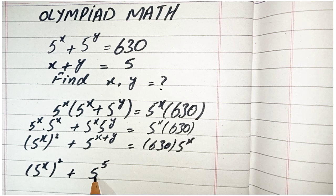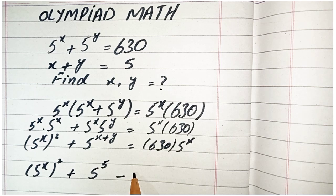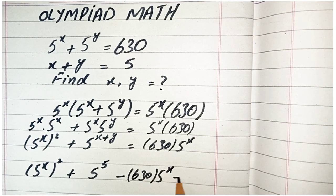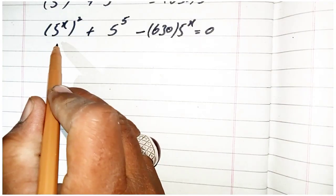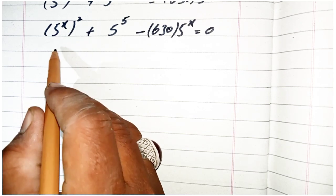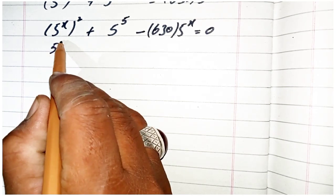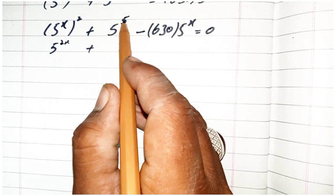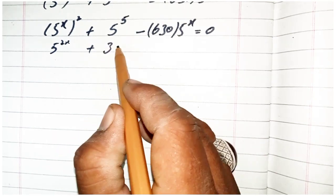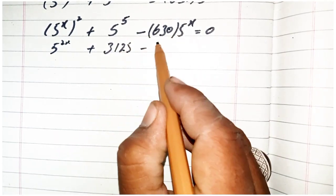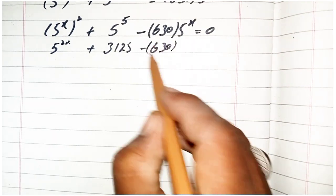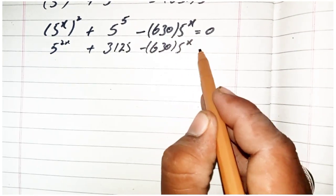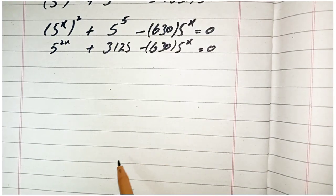We write 5 power (x plus 5) as 5 power 5, then take it to the left side of the equation. This becomes 5 power 2x plus 5 power 5 minus 630 times 5 power x is equal to 0. Since 5 power 5 equals 3125, we have 5 power 2x minus 630 times 5 power x plus 3125 is equal to 0.